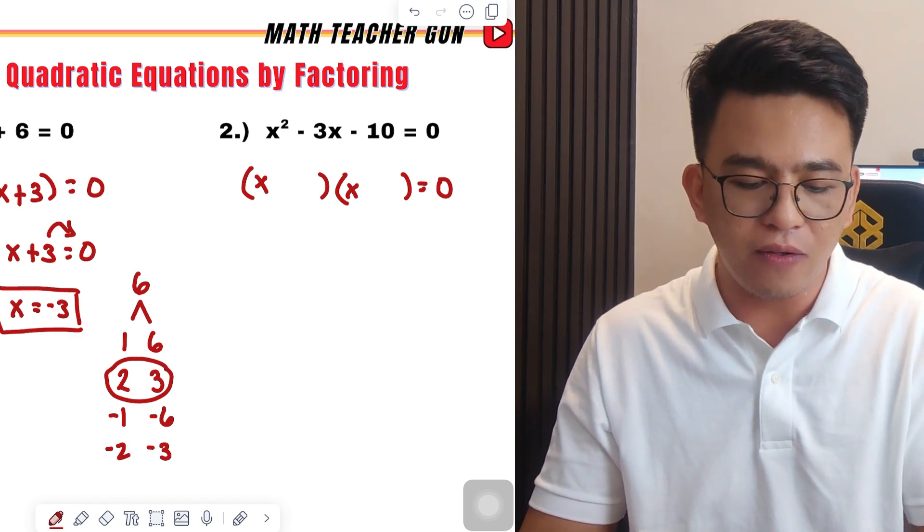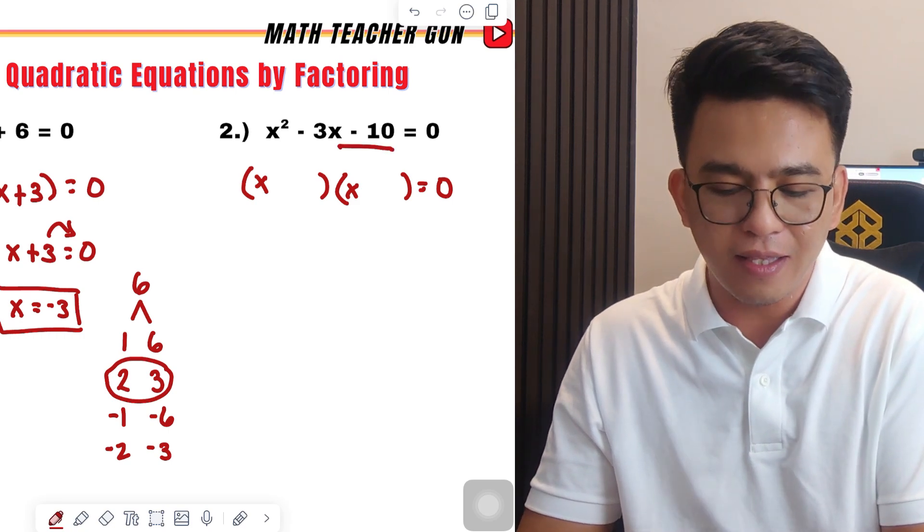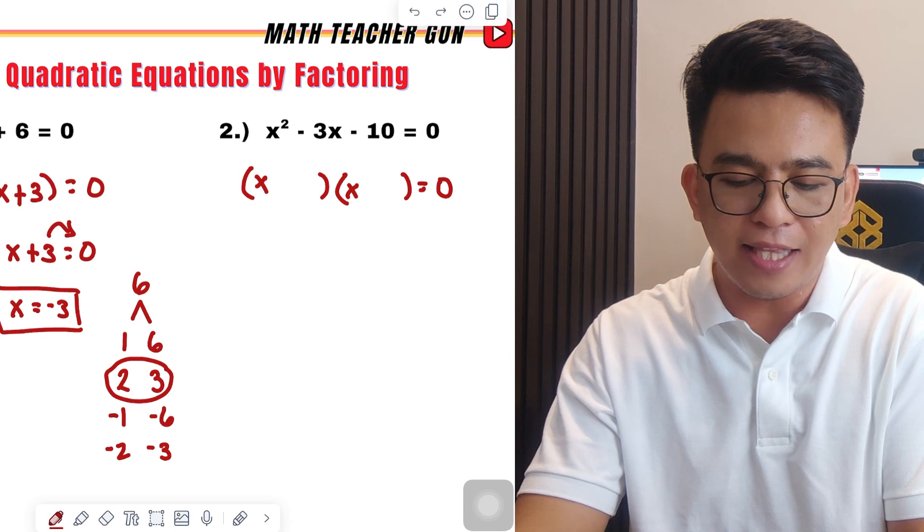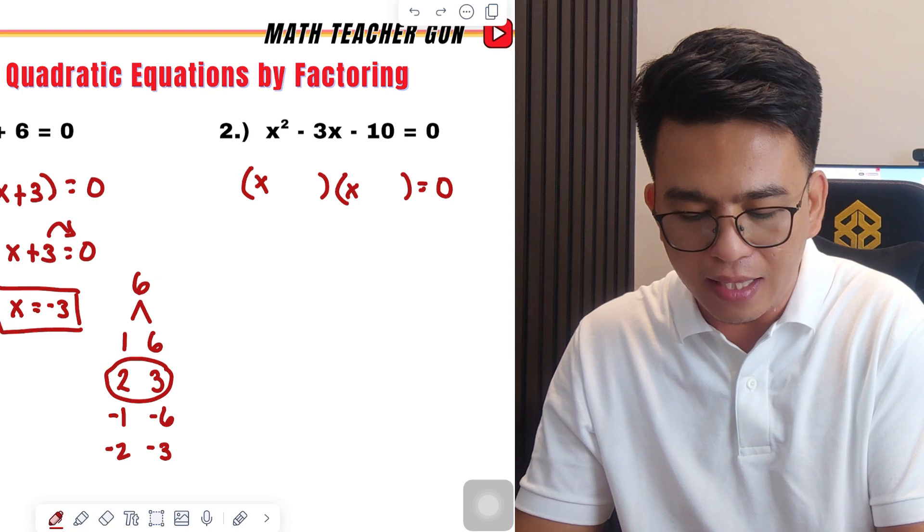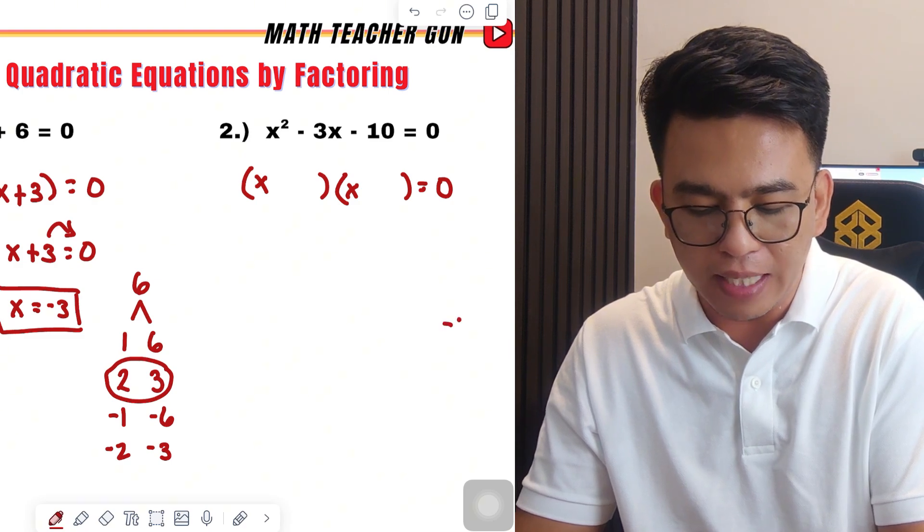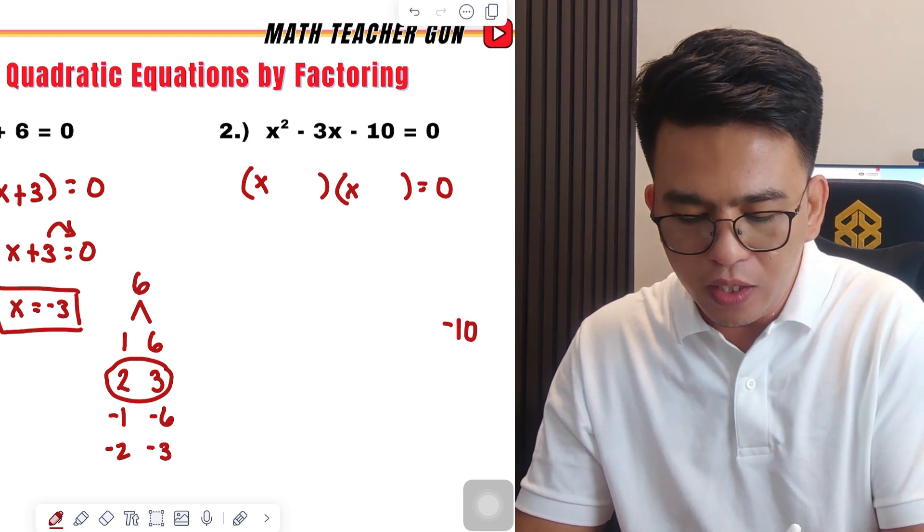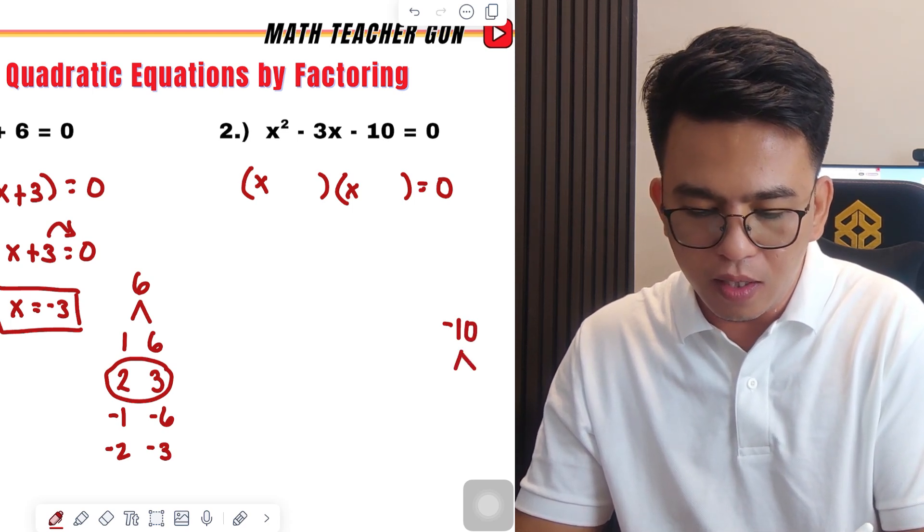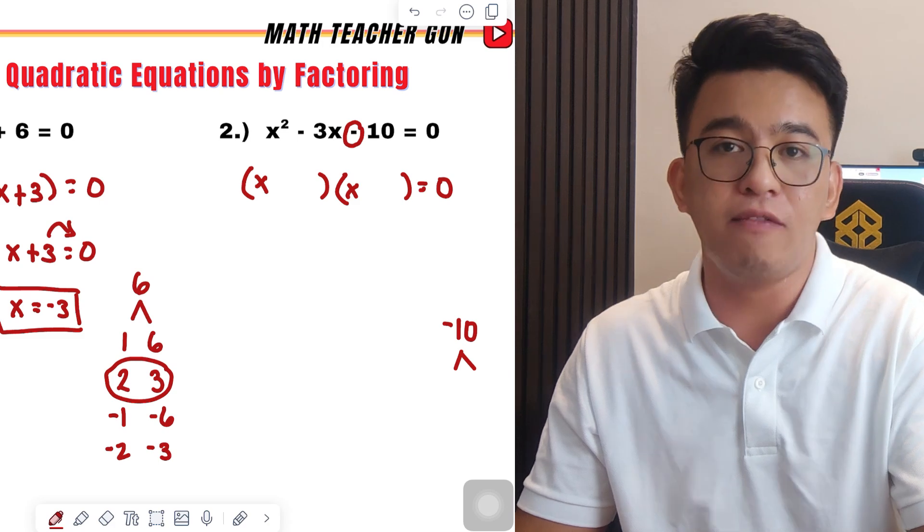Now, what we need to figure out is what factors of negative 10 that will add up to negative 3. So, let's list all or the ones we can use. We have negative 10. Since this one is a negative number, remember, the 10 is negative. Automatically, the sign of our factors must be different.